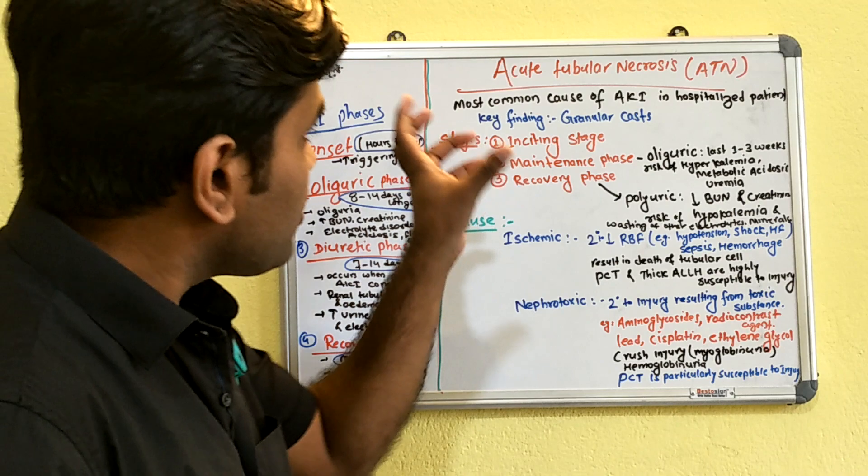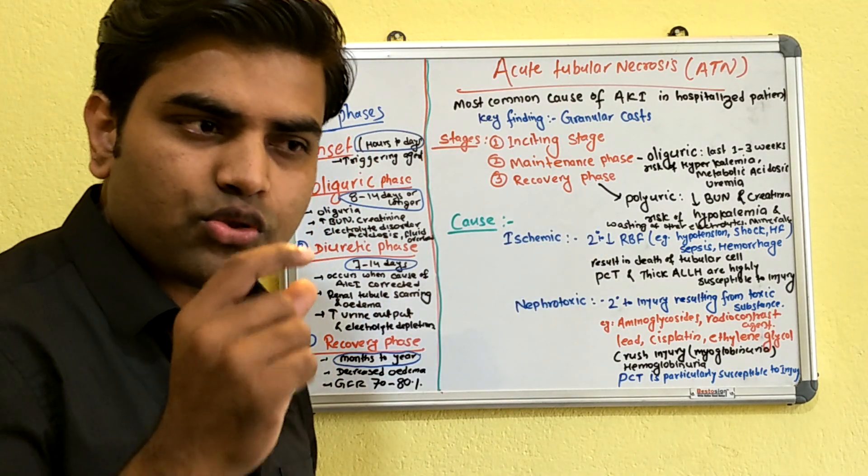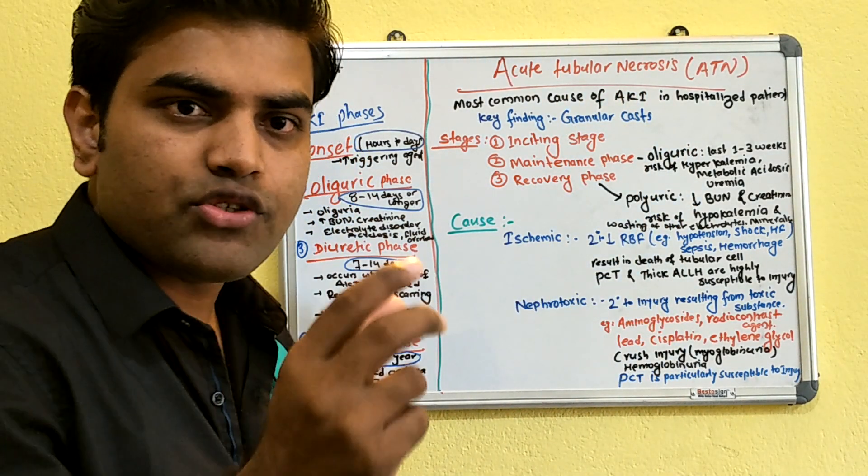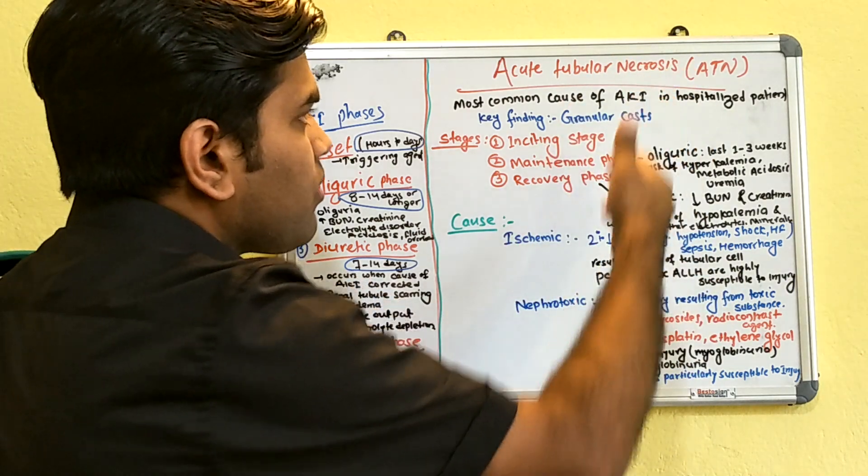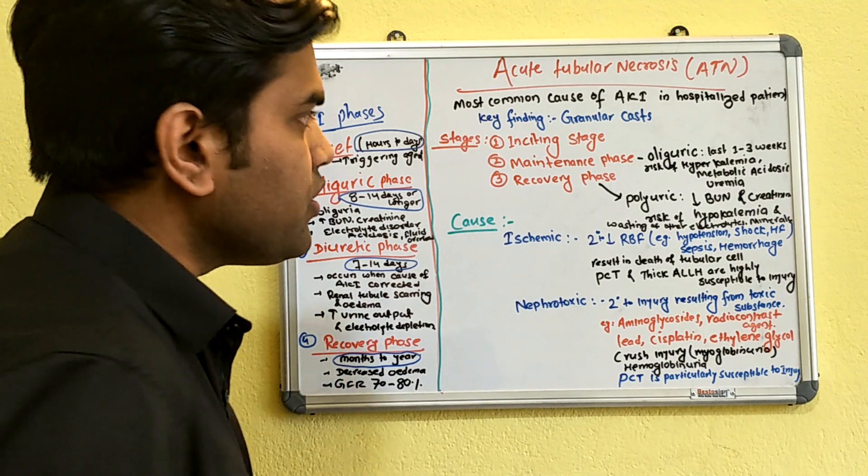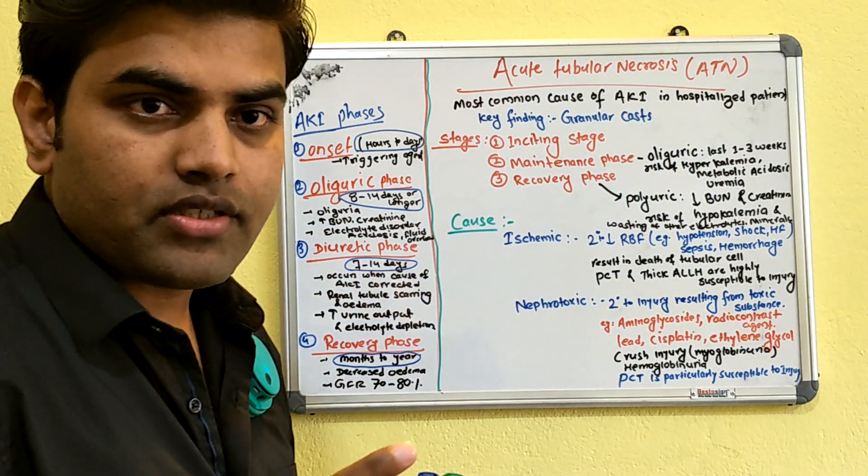Since we are talking about acute tubular necrosis, as I explained in previous lectures, this is necrosis of the tubule due to an acute cause. It is one of the most common causes of acute renal failure or acute kidney injury in hospitalized patients.